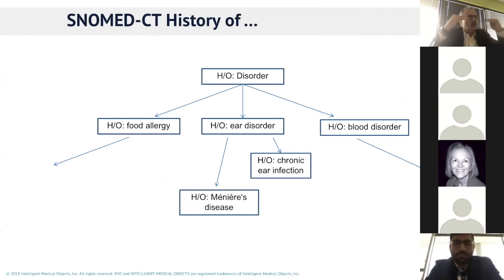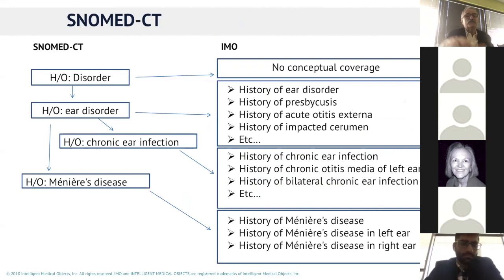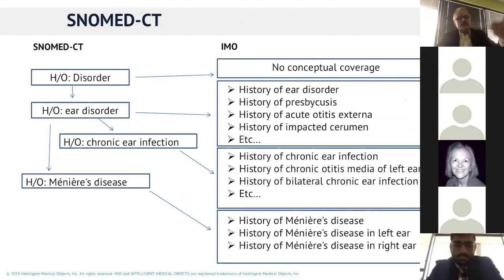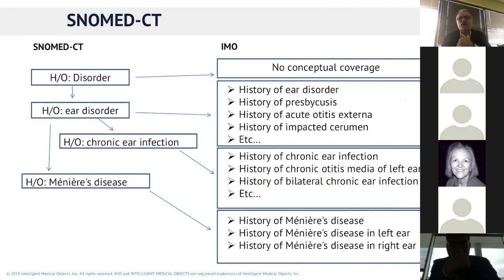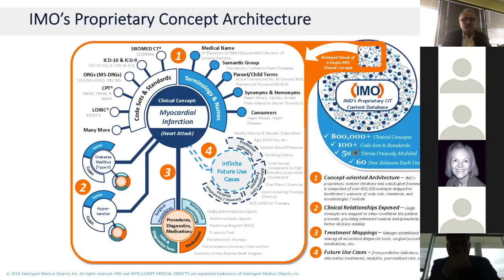SNOMED is hierarchical — that's why it's called a reference terminology, used for reporting clinical findings. When you get into actual clinical data and start slicing and dicing, you need to understand the dictionary, the reference dictionaries, and where those dictionaries are built. That's how you report on clinical data. IMO tries to manage that complexity in the background.